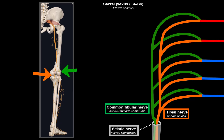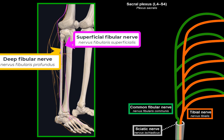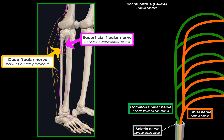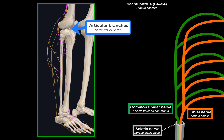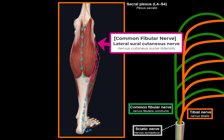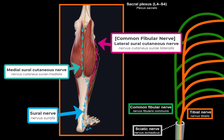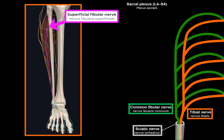Now let's move on to the common fibular nerve. It runs obliquely along the lateral side of the popliteal fossa, curves around the head of the fibula, and divides into two terminal branches: the superficial fibular nerve and the deep fibular nerve. Before those, there are articular branches providing somatosensory innervation of the knee joint and the tibiofibular joint, and the lateral sural cutaneous nerve providing somatosensory innervation for the lateral calf — which also joins the medial sural cutaneous nerve to form the sural nerve.